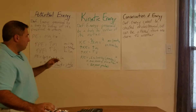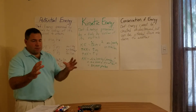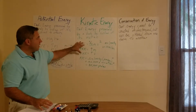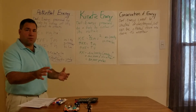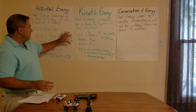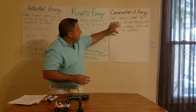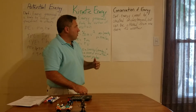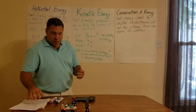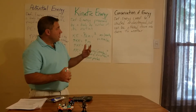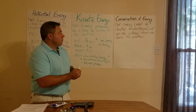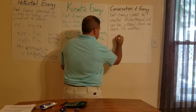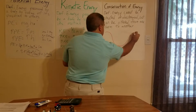So now we've seen that potential energy is something that can be — it's not there yet, but it can be. And kinetic energy is when that object moves and creates energy. These two work together in conservation of energy: energy cannot be created or destroyed, but can be altered from one form to another. We're going to use a skate park as an example.